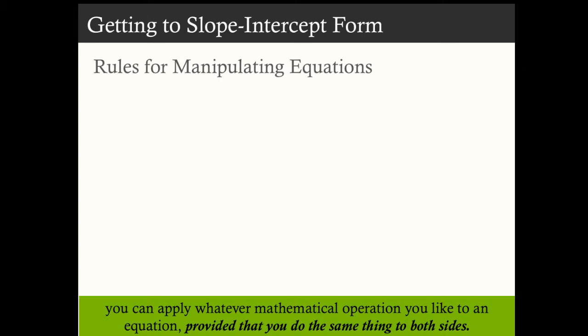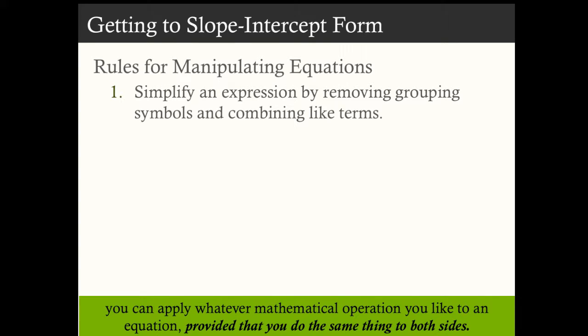So just a summary of the rules for manipulating equations from algebra. We can simplify an expression by removing grouping symbols and combining like terms. So for example, if you have 5x plus 3x on one side, you can just say that that's 8x.